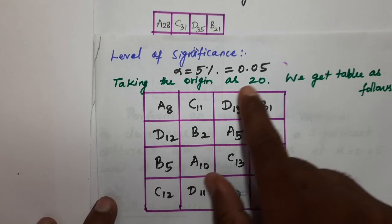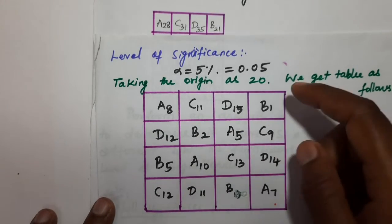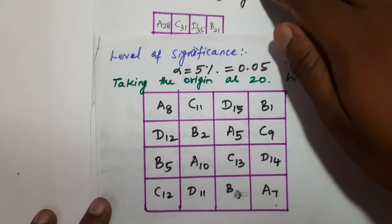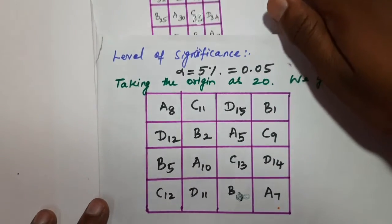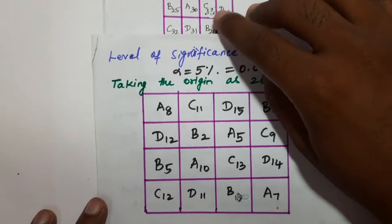Taking the origin as 20, values in the table will be adjusted by subtracting 20. This origin shift simplifies the calculations for the analysis of variance.